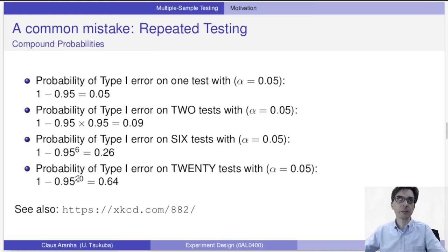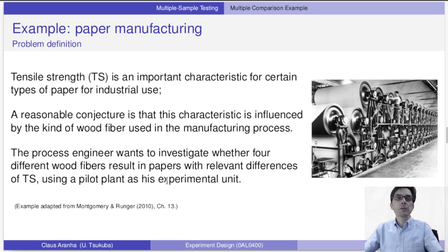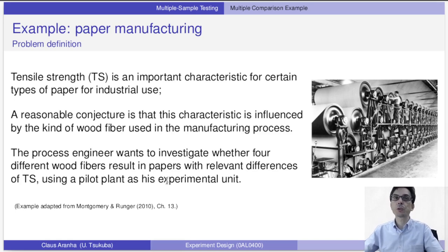Here's a concrete example. If we do one test, we get an error of about 5%. Two tests: the chance of error is 9%. Six tests: 25%. Twenty tests: the error rate reaches 65%. So let's think of a concrete example and discuss what we can do.